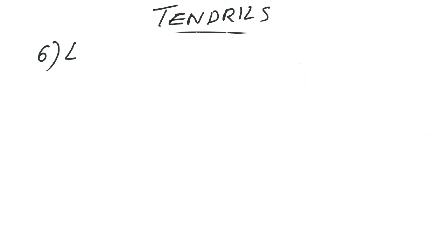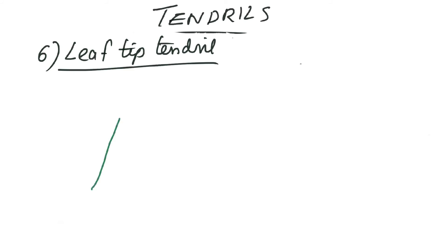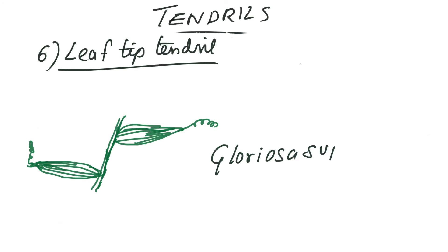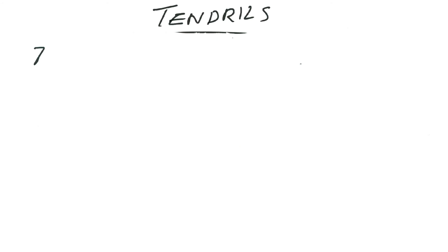The sixth specific example is an interesting case where the tip of the leaf, instead of ending in a natural apex, develops into a tendril shape. The leaf tip developing into a tendril is the sixth example. A specific case where such a development is seen is Gloriosa superba. The diagram clearly depicts this — the leaf tip is modified into tendrils in this particular case. Examples are very important as multiple choice questions in examinations usually deal with specific modifications.